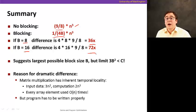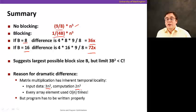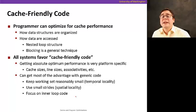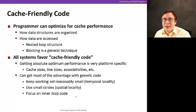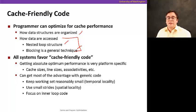The reason for this dramatic difference is that matrix multiplication inherently has temporal locality, but you have to reorder the operations to take advantage of it. The input data is 3n-squared and the computation is 2n-cubed, so every array element is accessed on the order of n times. But the program must be written properly; otherwise, the temporal locality is too far apart in time and the cache can't capture it.